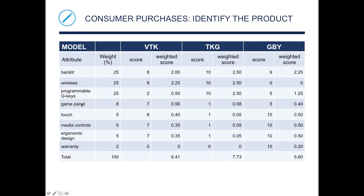These are hypothetical examples. If we're comparing three different models of a product, we list attributes such as backlit, wireless, programmable keys, game panel, touch, media controls, design, and warranty. We assign a weight — what's most important to us — then a score, and the weighted score is weight times that score. At the end, comparing the three products, we can see that the TKG model is the one that most suits our needs.